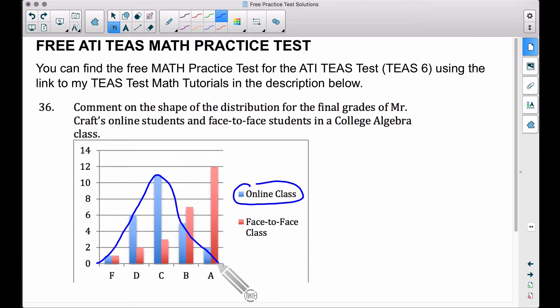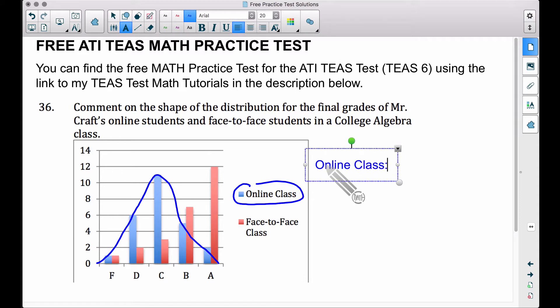...it looks kind of symmetrical to me. My drawing is not perfect by any means, but it has what's called a bell shape, a normal shape, a symmetric shape. If you take a stats course later on in your college career, you will run across these distributions. So I want to say the online class is approximately normal.